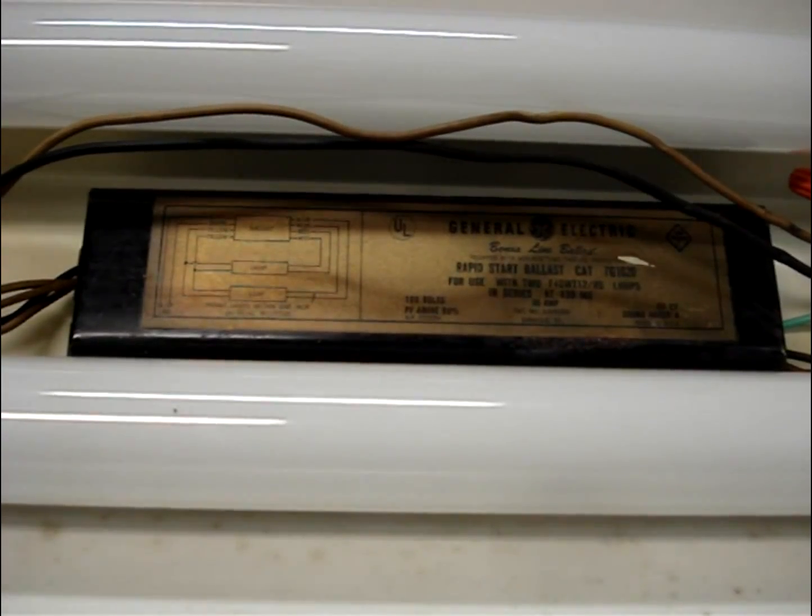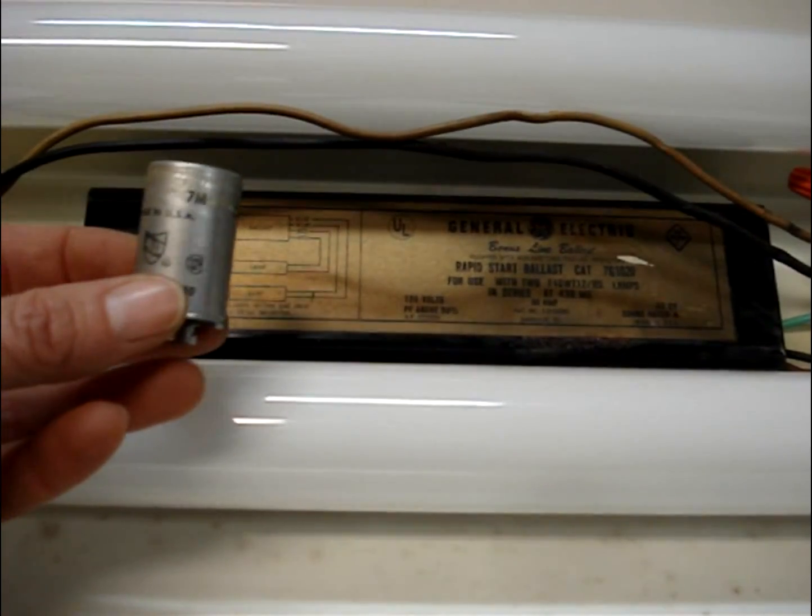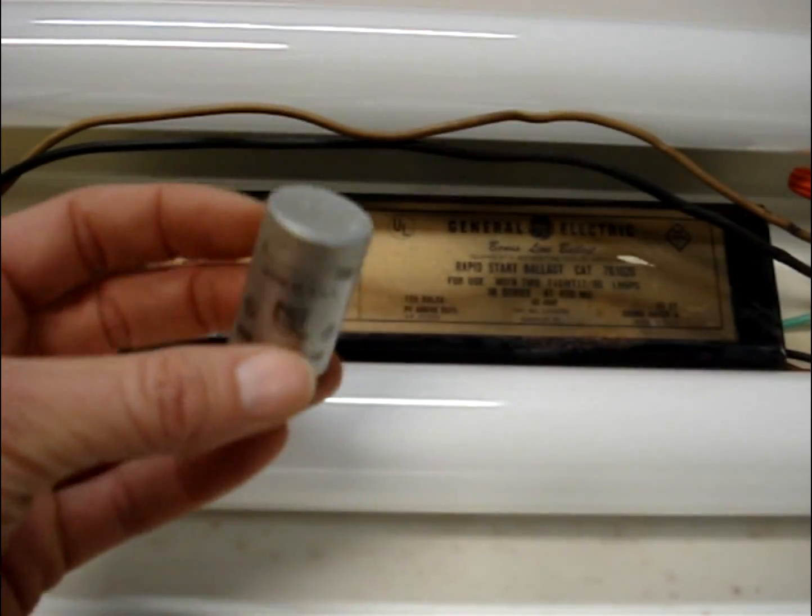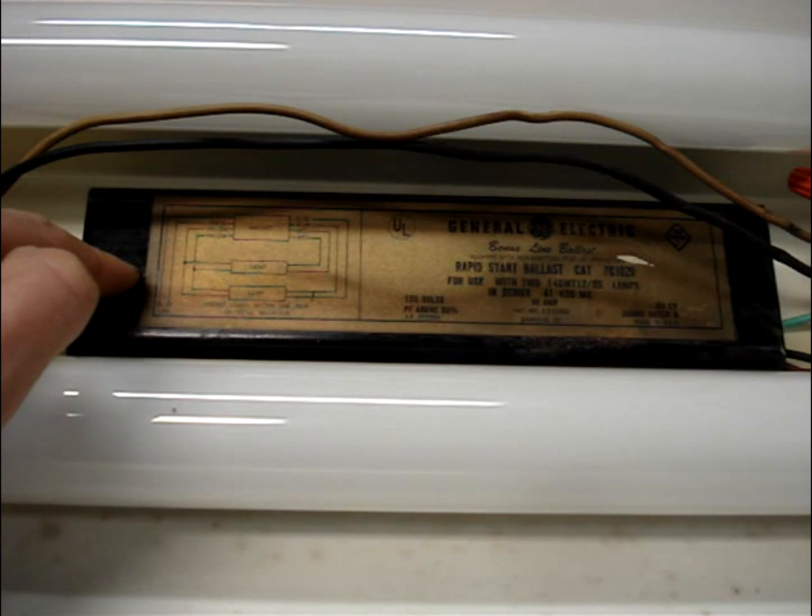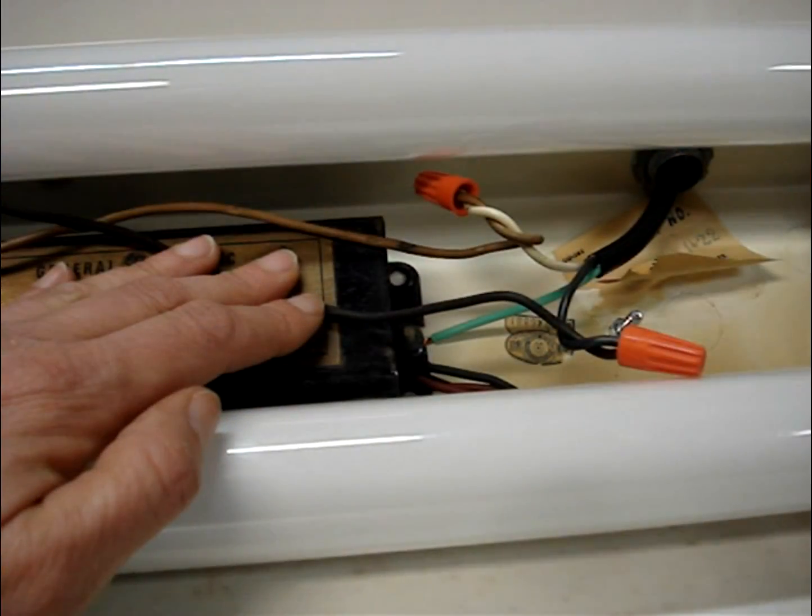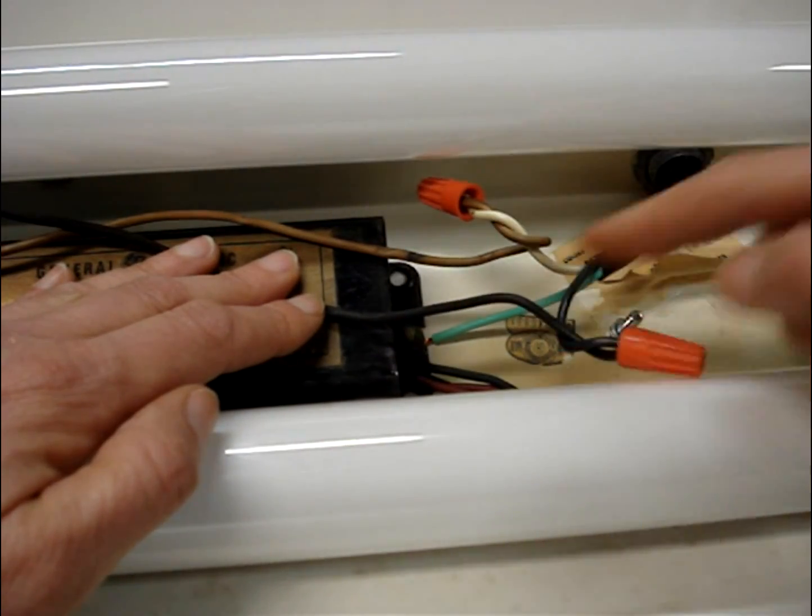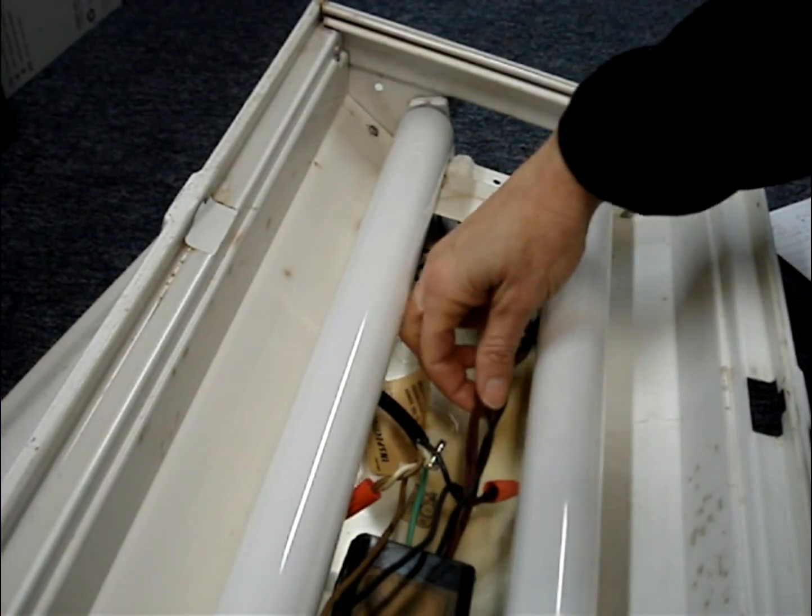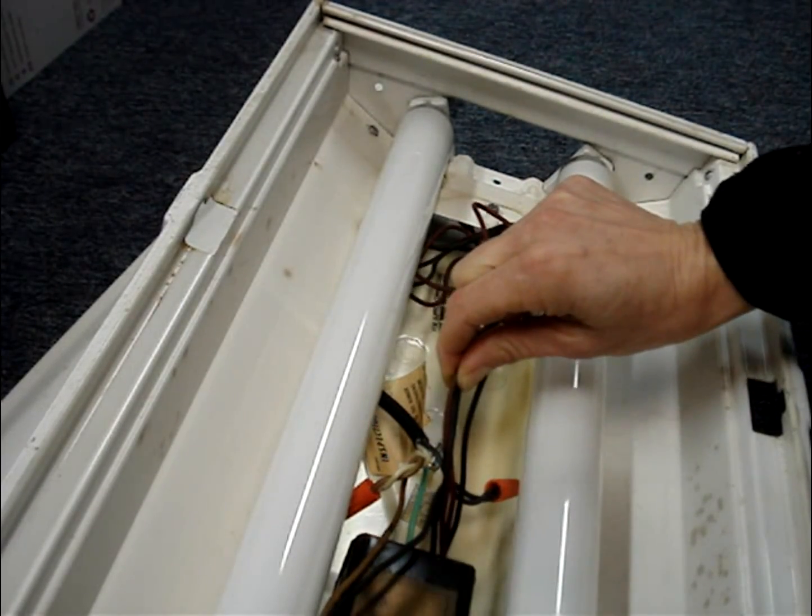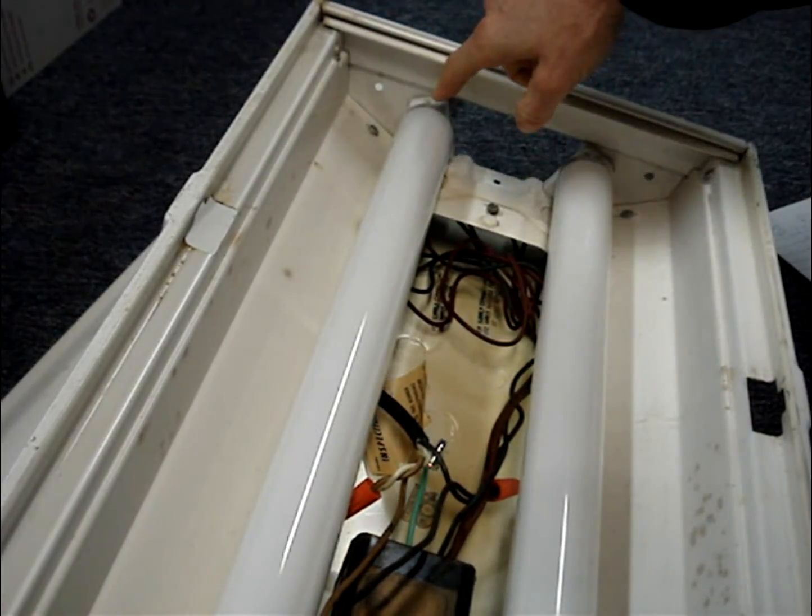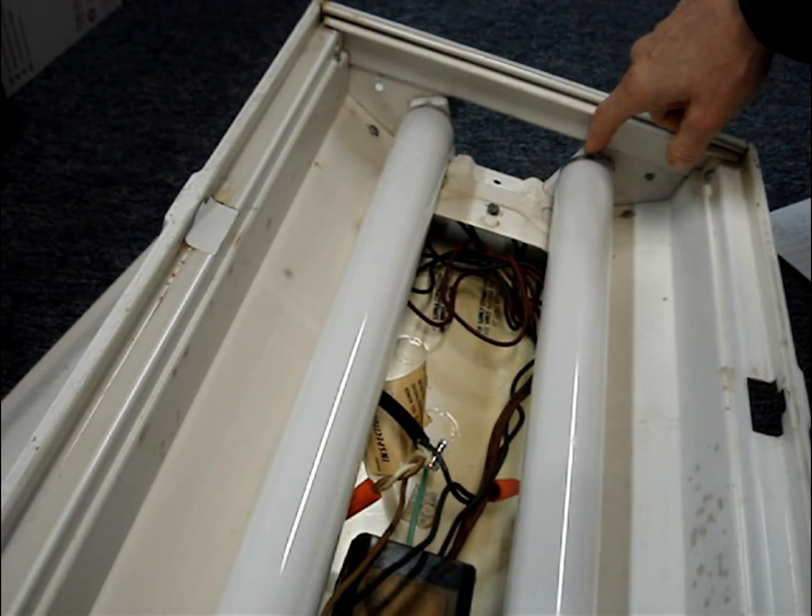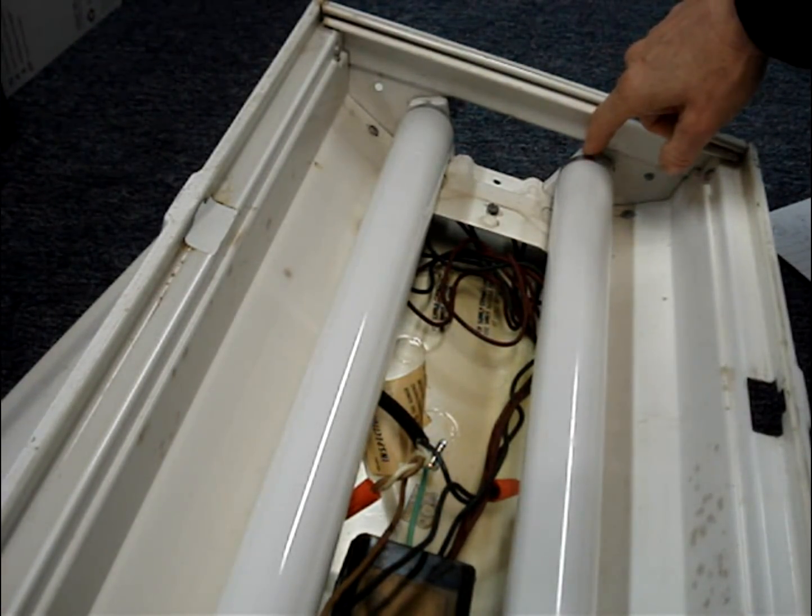Inside of a fluorescent tube fixture, you'll find a ballast and in some older fixtures you'll find a starter and a ballast. Both combinations have the same end result, they just accomplish it a little differently. 120 volts AC feeds into the ballast. The output from the ballast is connected to the sockets on the fixture and the sockets are sometimes called tombstones.